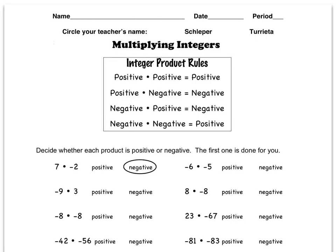Welcome to tonight's homework help for Thursday, August 30th, 2012. Let's jump right in. We have multiplying integers.